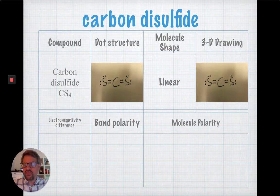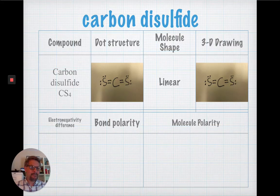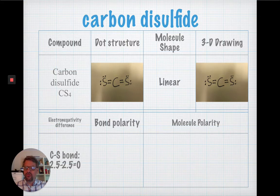Next, what is the electronegativity difference between carbon and sulfur? Take a minute and determine that. So, the difference is zero. They have the same electronegativity. So, what kind of bond is it? It's a non-polar bond.